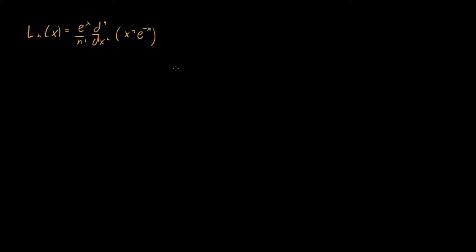What I want to do is turn this expression into a series, and the way I'm going to do that is by using something called the general Leibniz rule. The general Leibniz rule is a way of writing a generalized product rule. We know how to do a product rule when it's just a first derivative acting on two functions f and g, but what happens when we have an nth derivative? The expression looks a lot like the binomial theorem.